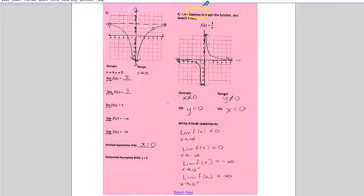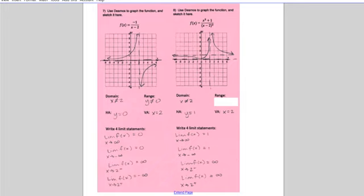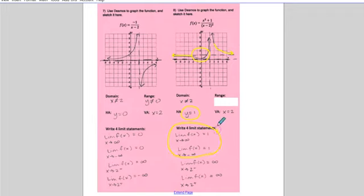We don't know a ton about this kind of function yet, so we might have a few mistakes. In fact, I even have a mistake. Looking at number eight, I drew the graph based on what I saw in Desmos, and I noticed that in this area it dipped down a bit but then went back toward a height of one — going toward a height of one on both sides. That's why we get the horizontal asymptote y equals one.